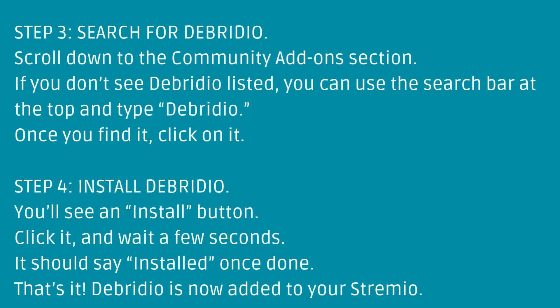Step 3: Search for Debritio. Scroll down to the Community Add-ons section. If you don't see Debritio listed, you can use the search bar at the top and type Debritio. Once you find it, click on it.